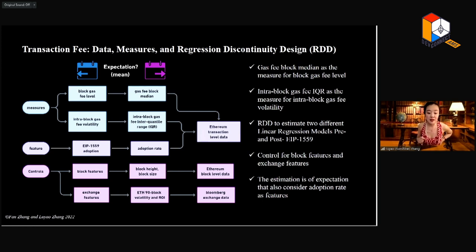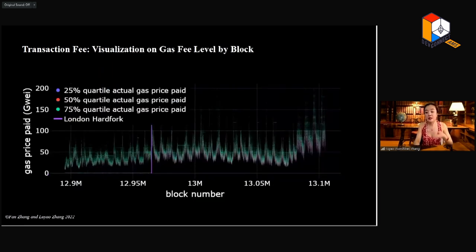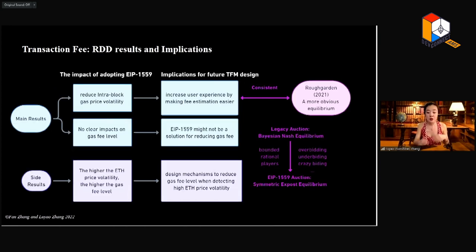Our major result on transaction fees is as follows. We control the block feature, which is the block size and block height. We also control the exchange feature, which has the volatility and return of investment of the ether. The feature we want to know is once the adoption on EIP-1559 increases, how will it affect the two things. One is the median gas fee, and another is intra-block gas fee volatility. The results show that the first one will not change much because London fork is not the solution for scalability. The second one decreases significantly. If you only see those figures without the scientific method we mentioned, you are not going to see a clear clue on what is the change of direction that you can see on this figure. Even if you see something, it might not be the correct direction. It might be because of an NFT drop or something else.